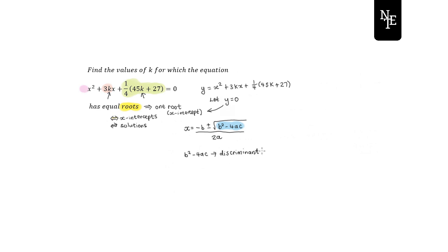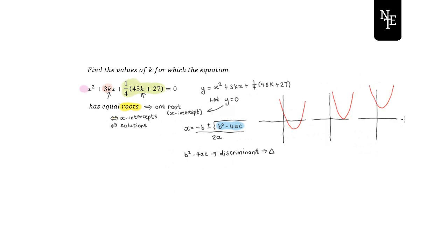We give the discriminant the symbol delta, a small triangle. There are three different situations you'll come across. In the first situation you have two x-intercepts. In the second situation you only have one x-intercept — when you go through the calculations you find two of the same values, so that's where 'equal' comes from. One root and equal root mean exactly the same thing. In the last situation you have no x-intercepts at all.